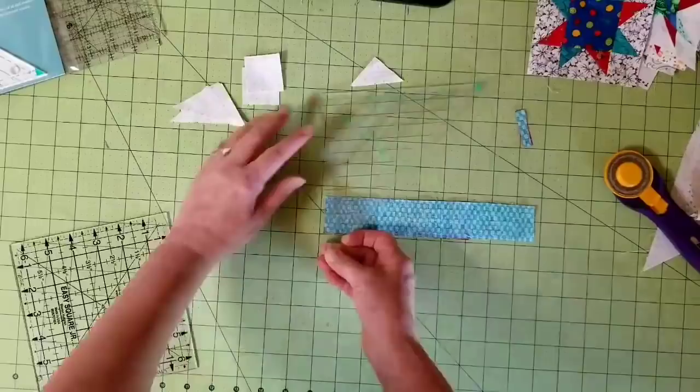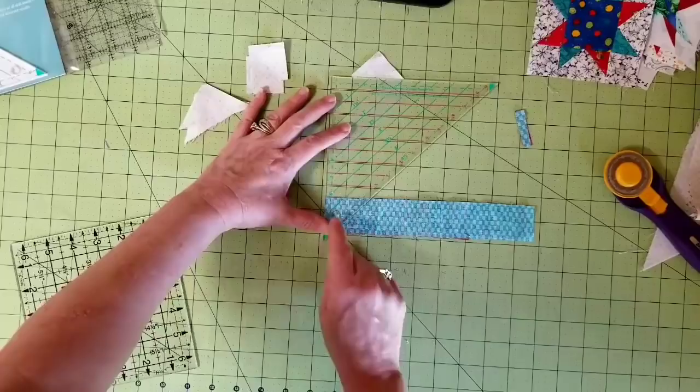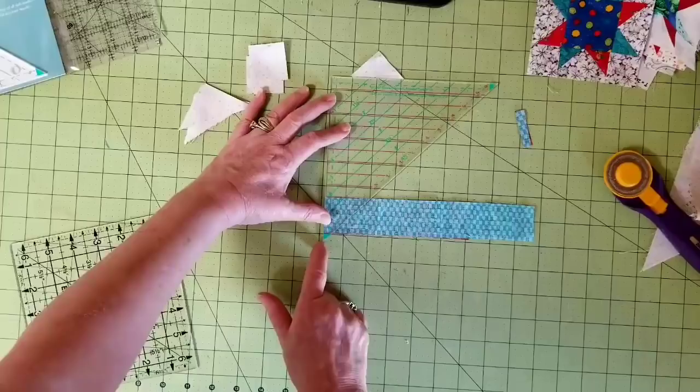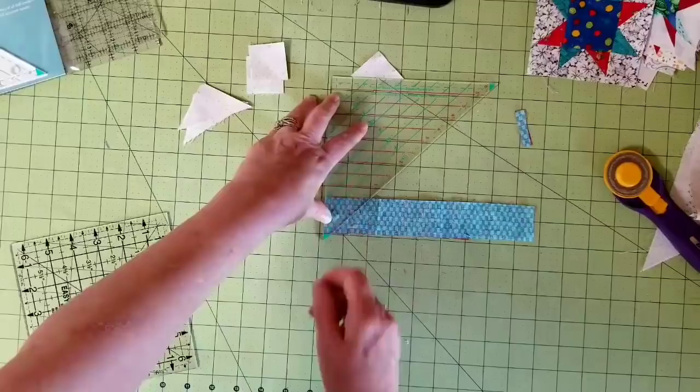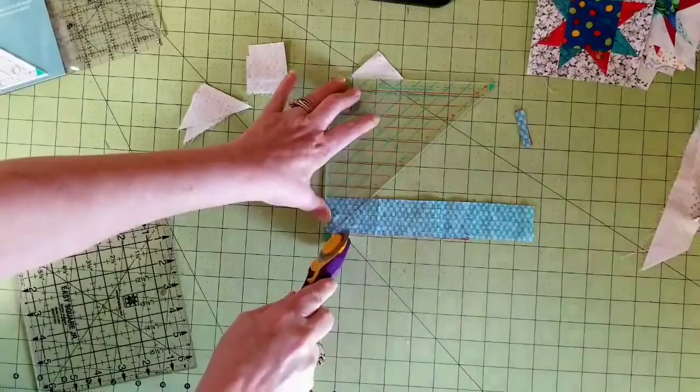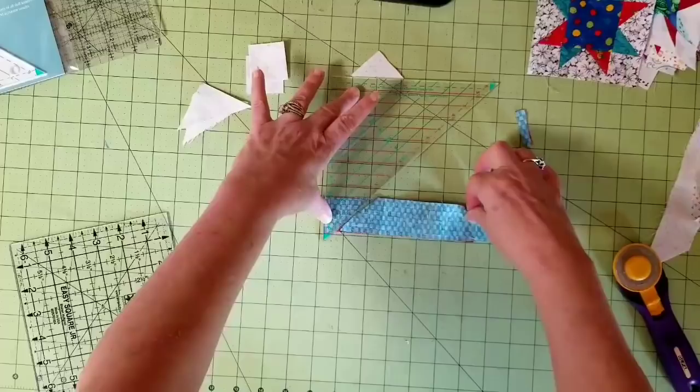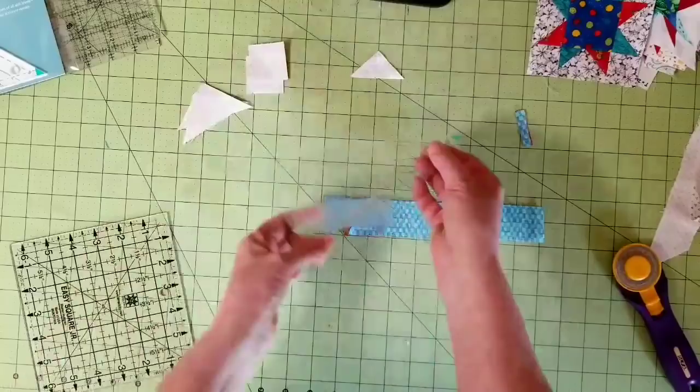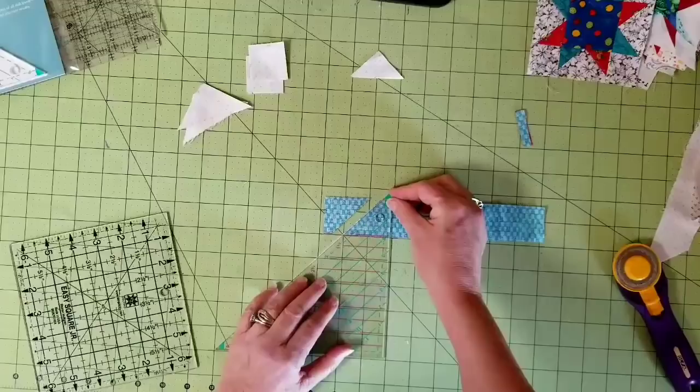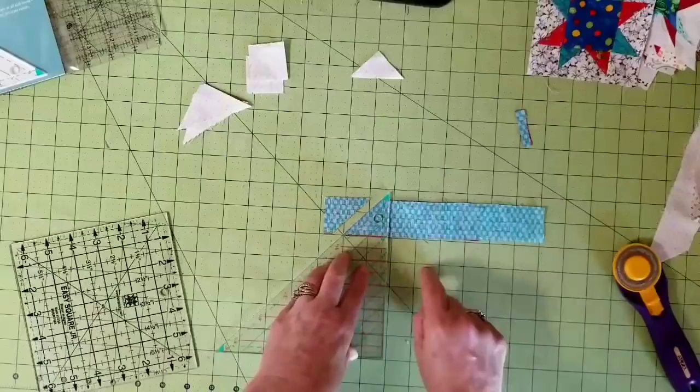This is going to be a one inch finished half square triangle. See this first line here has a number one right by it. That's the finished size. So that's the line that I'm going to put at the top of the strip set. You'll see that the line is on the fabric and that the green dog ear is hanging off below the strip set. We're going to be cutting these with one set of dog ears already trimmed off. That trimmed off dog ear becomes a placement guide for against the quarter square triangles that we have just cut. I am going to cut four pairs.